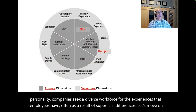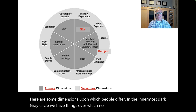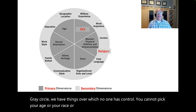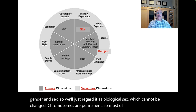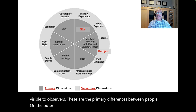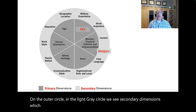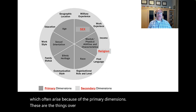There are some dimensions upon which people differ. In the innermost dark gray circle, we have things over which no one has control. You cannot pick your age, race, or ethnic heritage. Regarding biological sex, chromosomes are permanent. Most of these dimensions are visible to observers. These are the primary differences between people. On the outer light gray circle, we see secondary dimensions, which often arise because of the primary dimensions. These are the things over which we have some choice, mostly.